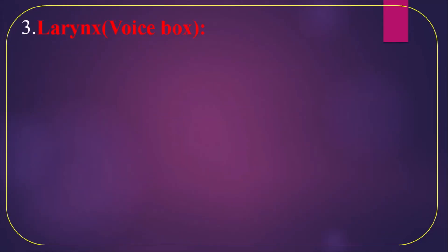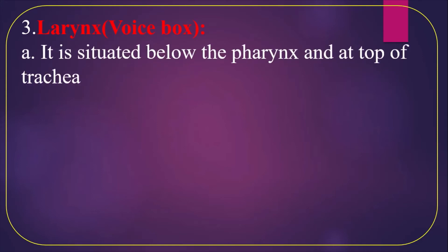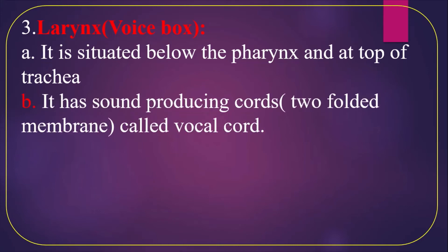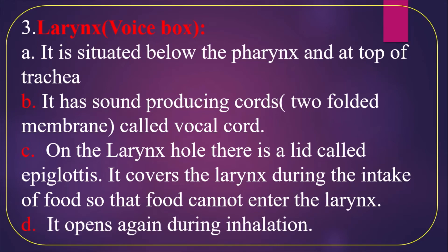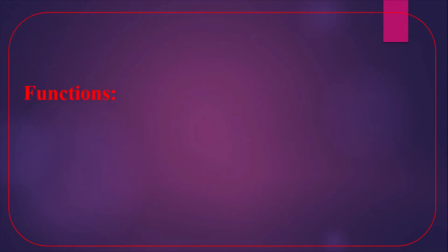Number three: larynx, or voice box. It is situated below the pharynx and at the top of the trachea. It has sound-producing structures called vocal cords — two folded membranes that help make sound, which is why the larynx is called the voice box. On the larynx opening there is a lid called the epiglottis, which covers the larynx during the intake of food so that food cannot enter the larynx. It opens again during inhalation.